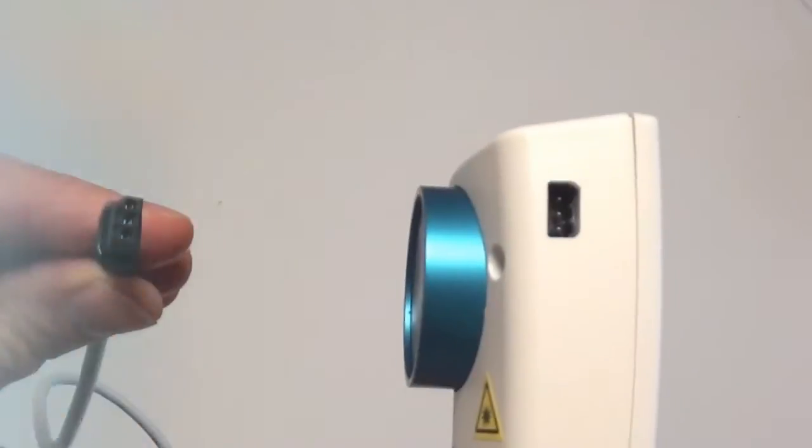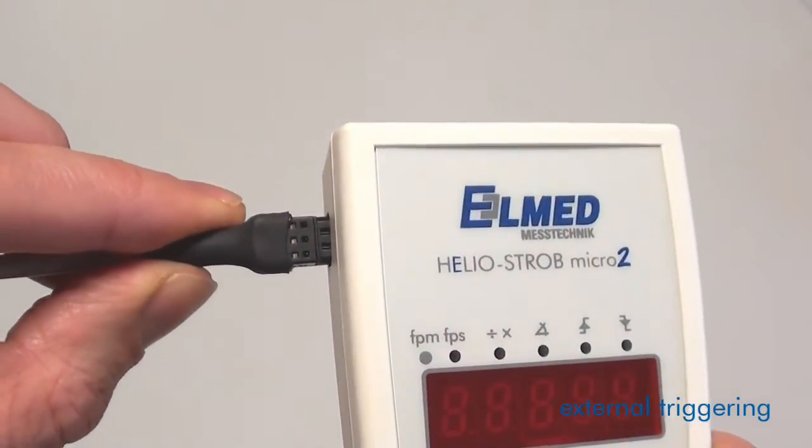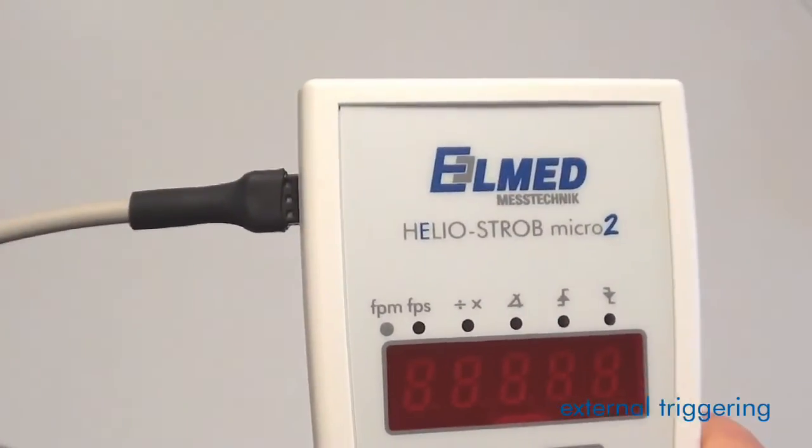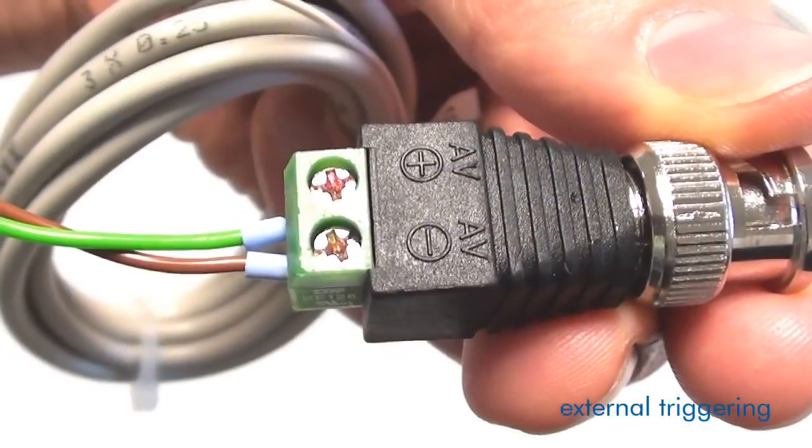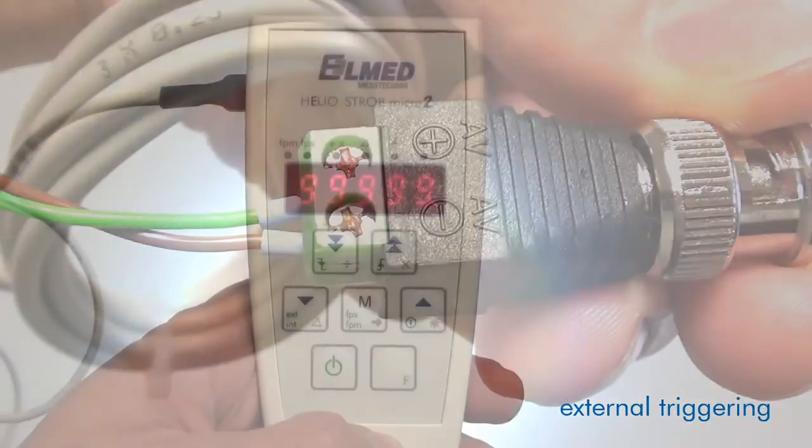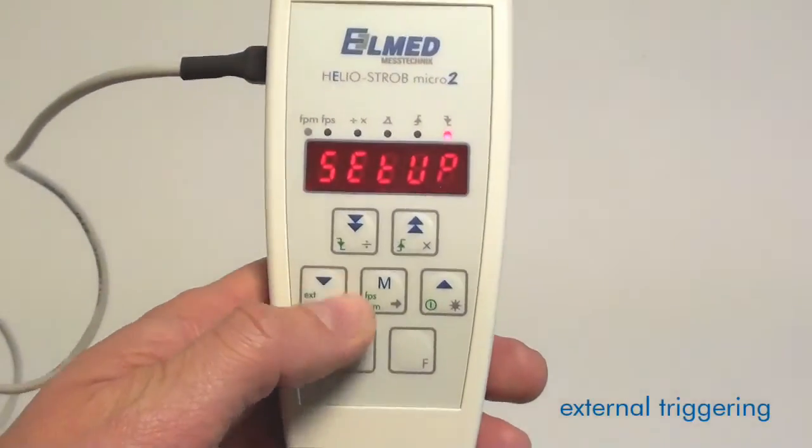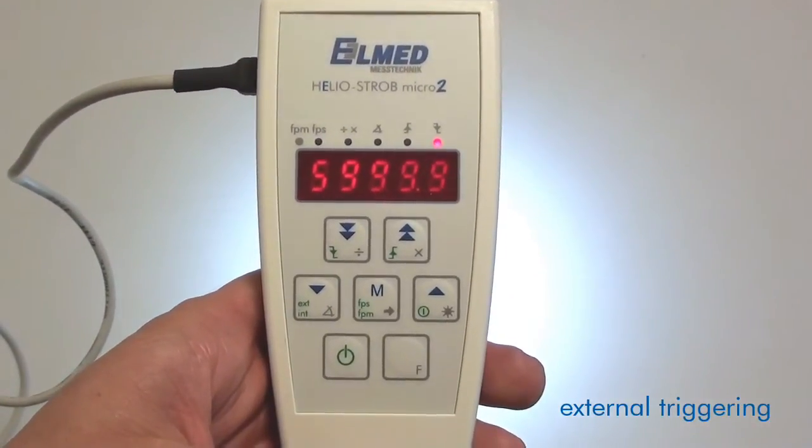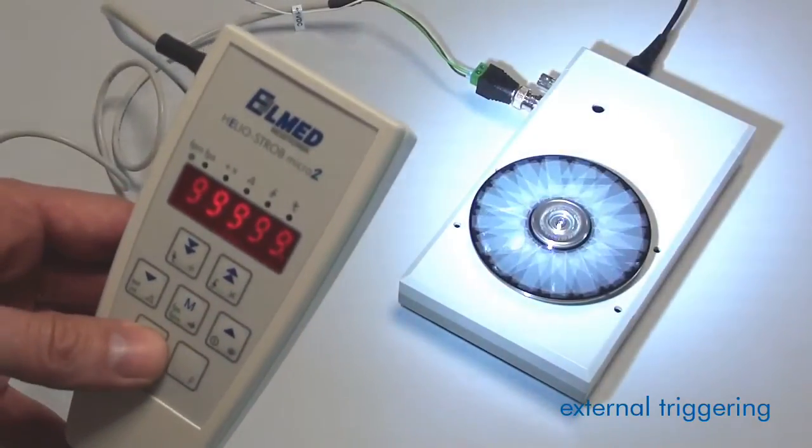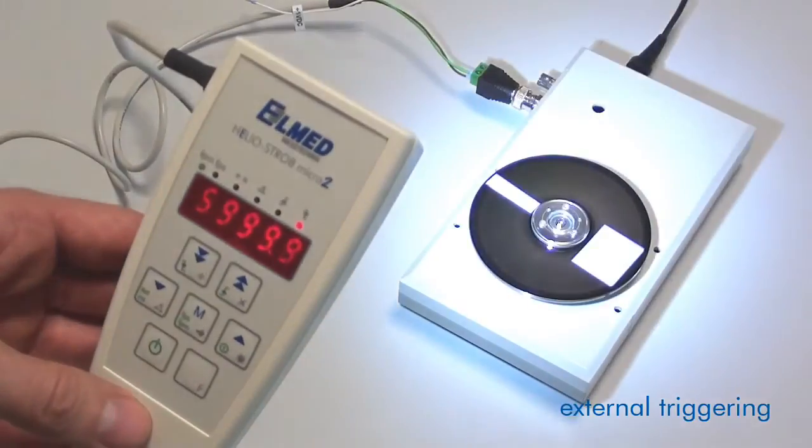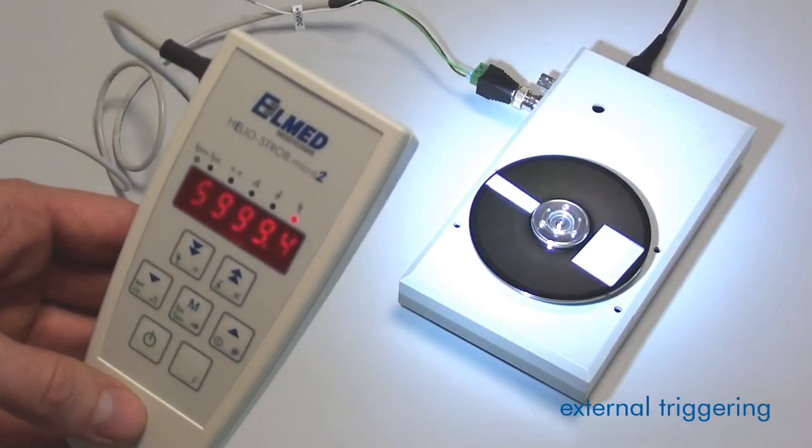The automatic synchronization of the flash rate with a moving object can easily be achieved by feeding an external clock. Use the trigger cable included in the delivery and, if necessary, the BNC adapter. By pressing the function key F and subsequently the COMMAND key EXTERN, you switch to the external triggering mode. As soon as an external clock is detected, the stroboscope flashes according to the frequency signal. It goes without saying that you can connect different industrial encoders. For this, the HelioStrobe Micro 2 provides a 10V supply voltage.